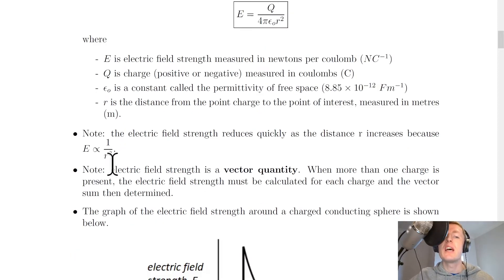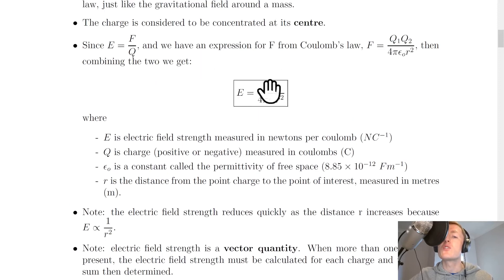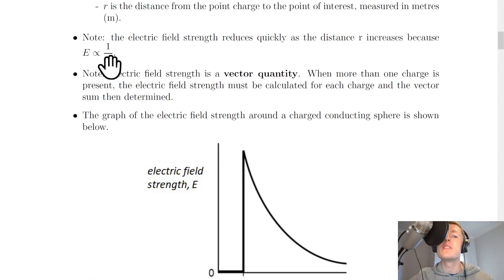Note that the electric field strength reduces quickly as the distance R increases, because E is proportional to 1 over R squared. That shows the inverse square law part of this equation. If we ignored the Q and 4 pi epsilon not, we could see that E is directly proportional to 1 over R squared, or inversely proportional to R squared. This means that as you get further away from the charge, the electric field strength will drop off quickly.